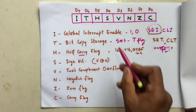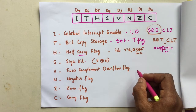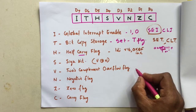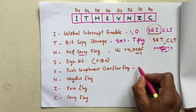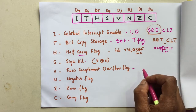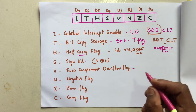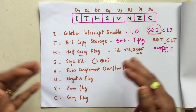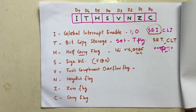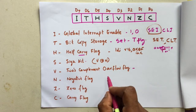Now V is the two's complement overflow flag. When the result of an operation is too large to fit in a 7-bit number, the two's complement overflow flag will be set higher.